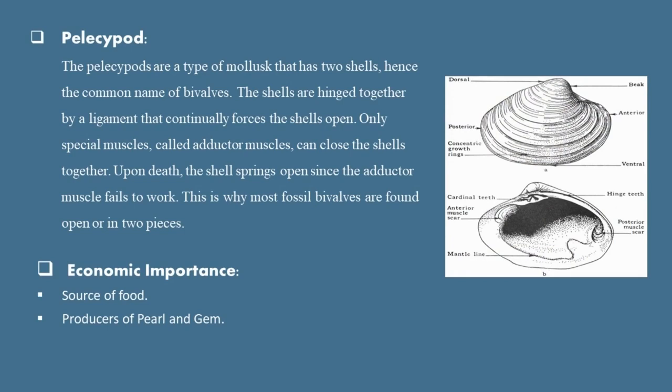The Pelecypods are a type of mollusk that has two shells, hence the common name bivalve. The shells are hinged together by a ligament that continually forces the shells open. Only special muscles, called adductor muscles, can close the shells together. Upon death, the shell springs open since the adductor muscle fails to work. This is why most fossil bivalves are found open or in two pieces.